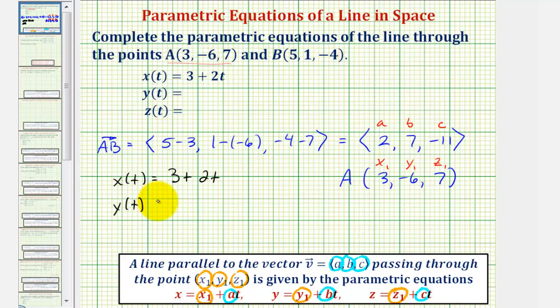And y(t) would be equal to negative 6 plus 7t, and z(t) would be equal to 7 minus 11t.